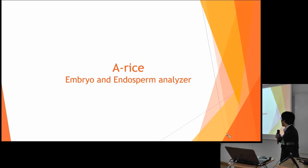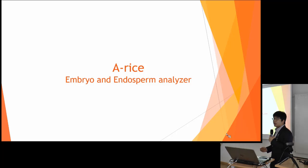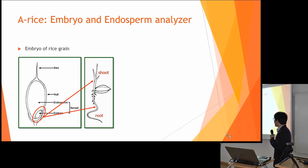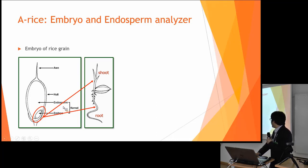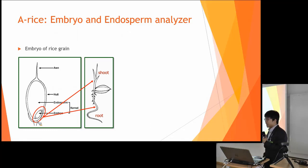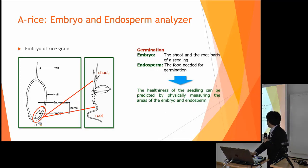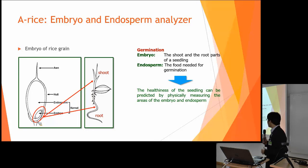Moving on to the next device — this is our device for embryo and endosperm analysis, focused mainly on rice grain scanning. The embryo of the rice grain is located here, and its size affects the germination of the rice. The health rate of the seedling can be predicted by physically measuring the area of the embryo and the endosperm.